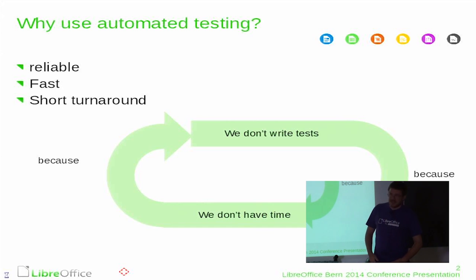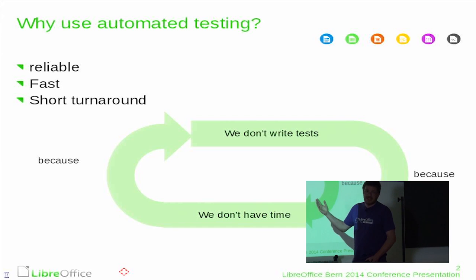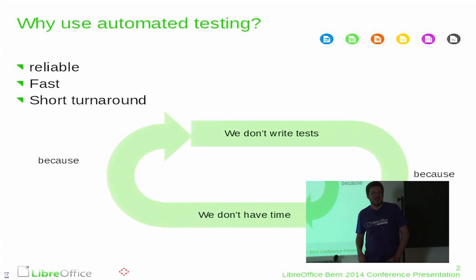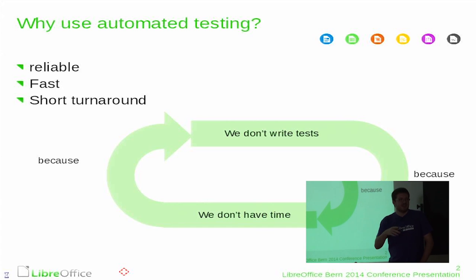You know the cycle: we don't write tests because we don't have time, we need to fix bugs. And that's because you don't write tests originally. If you add a test for each fixed bug, it won't appear again, and over time the number of bugs introduced decreases. You just need to break this cycle once and suddenly you have time to add tests because you have fewer bugs.